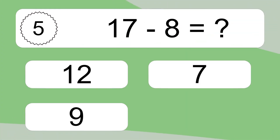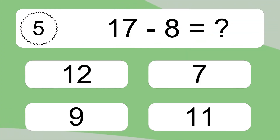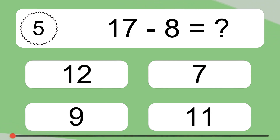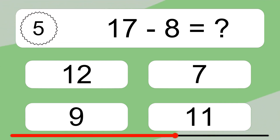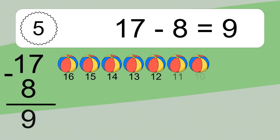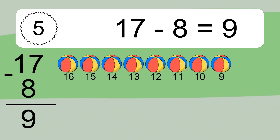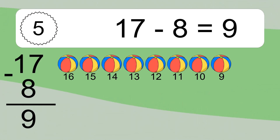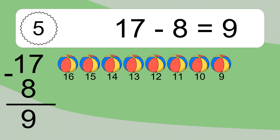17 minus 8 equals what? 17 minus 8 equals 9. Let's count it: 16, 15, 14, 13, 12, 11, 10, 9.